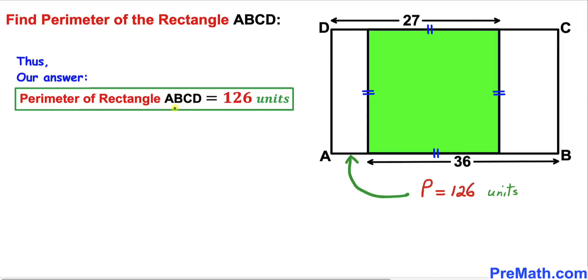So the perimeter of this rectangle ABCD turns out to be 126 units — that's our final answer. Thanks for watching, and please don't forget to subscribe to my channel for more exciting videos. Bye!